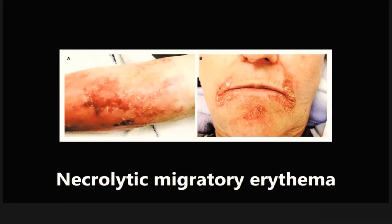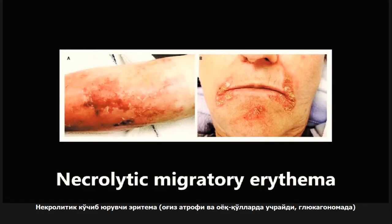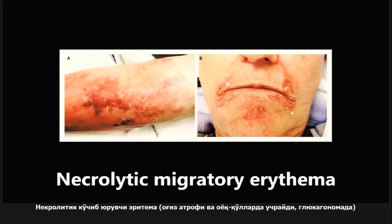This next one is an example of necrolytic migratory erythema — these skin lesions typically seen around the mouth and the distal extremities. The important thing is that it is associated with a glucagonoma. They'll likely give you a vignette leading towards glucagonoma, or might ask what the physical finding might be, and the answer is necrolytic migratory erythema.